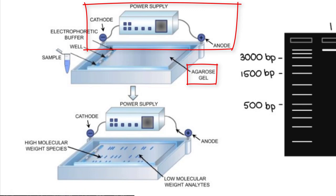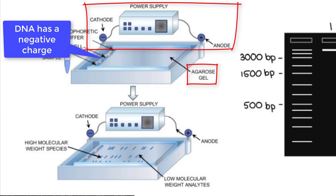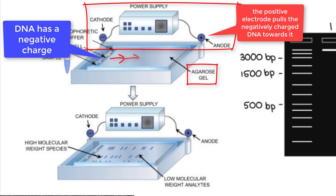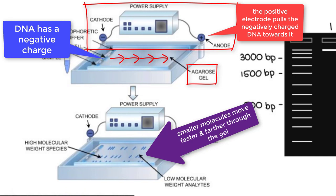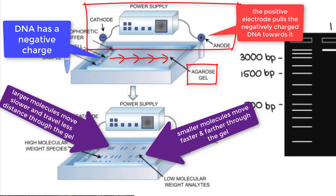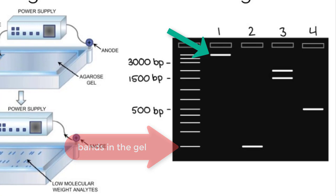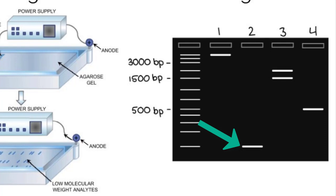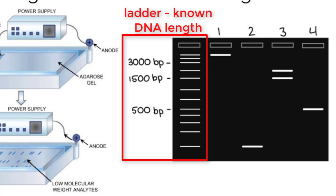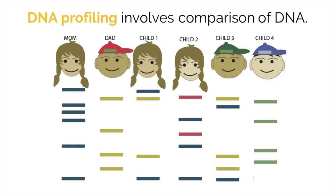Smaller proteins or DNA strands will move faster with less resistance and so move farther through the gel. Larger molecules, on the other hand, move slower and travel less distance. This results in samples of different sizes traveling at different speeds and ending up at different distances, creating bands in the gel. Sample one is made up of longer strands of DNA because the band did not travel far from the well it was placed in, whereas sample two is made up of short strands of DNA since it traveled much farther. Scientists often use a ladder with known DNA length to compare new samples, as seen in the first column of the image.